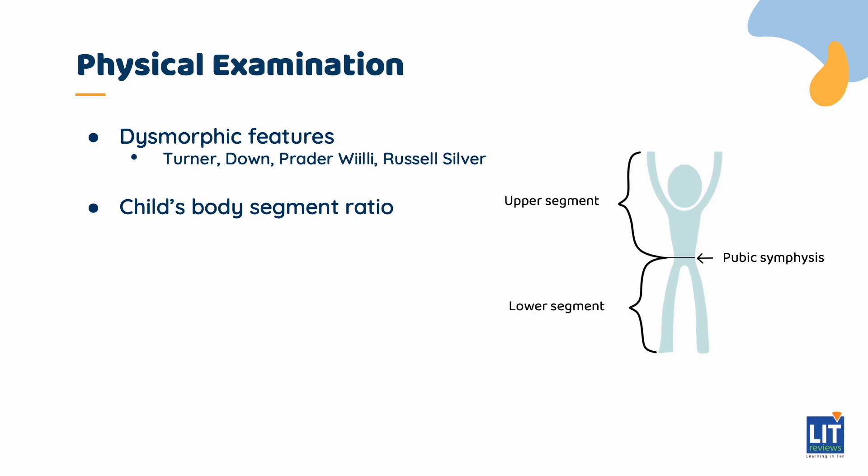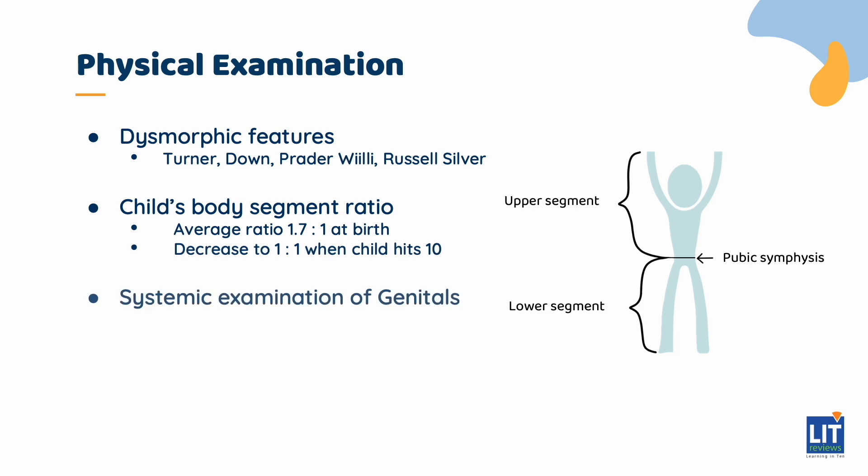The upper segment is measured from the vertex of the head to the pubic symphysis. The lower segment is measured from the pubic symphysis to the sole of the foot. The average ratio is 1.7:1 at birth but would decrease to 1:1 when a child hits 10 years of age. It is also important to examine the genitals, as delayed puberty may suggest constitutional growth delay, especially if the family history also corresponds — for example, mothers with late menarche and fathers having growth spurts later than their peers.